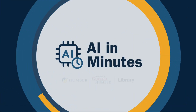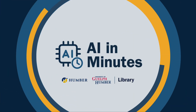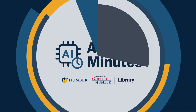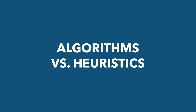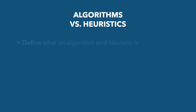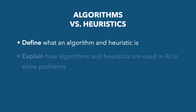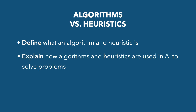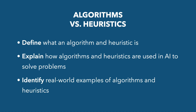Welcome to AI in Minutes from the Humber and University of Guelph-Humber Library. Algorithms vs. Heuristics. By the end of this video you'll be able to define what an algorithm and heuristic is, explain how algorithms and heuristics are used in AI to solve problems, and identify real-world examples of algorithms and heuristics.